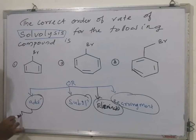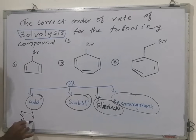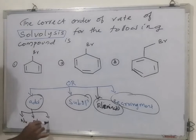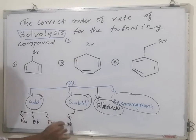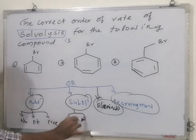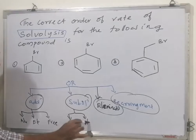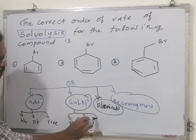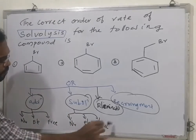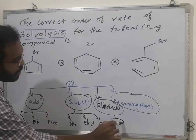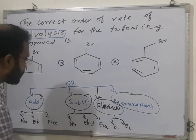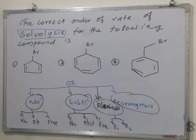Additions are again nucleophilic, electrophilic, or free radical. Substitutions are nucleophilic, electrophilic, or free radical. Eliminations are E1 and E2. Therefore, when a reaction is mentioned in the question paper, you should be able to identify which kind of reaction it is.